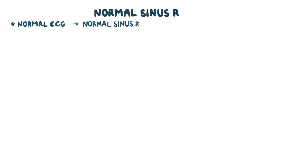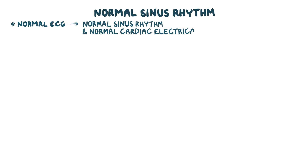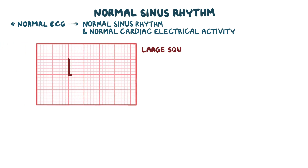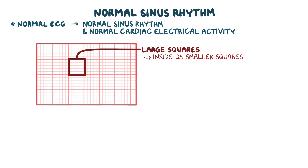The findings of a normal ECG indicate a normal sinus rhythm and normal cardiac electrical activity. The ECG paper has large squares with thick lines, and inside each are 25 smaller squares with thinner lines. Horizontally, each small square represents 0.04 seconds, and vertically, each small square represents 0.1 millivolts.